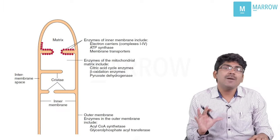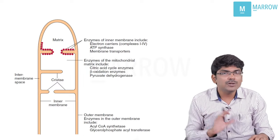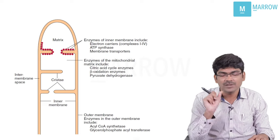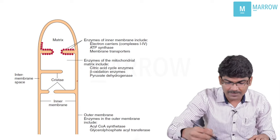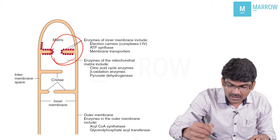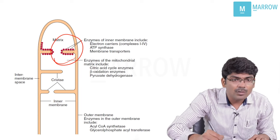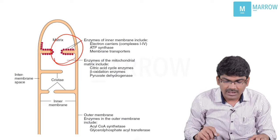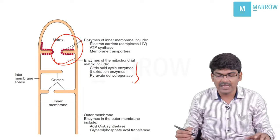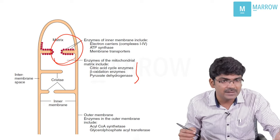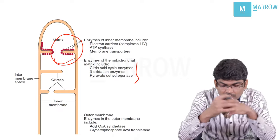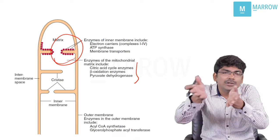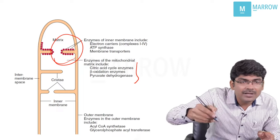Mitochondria is a double-layered structure with an outer membrane, inner membrane, and a space between them known as the intermembranous space. There is a matrix, and the inner membrane is folded upon itself to produce cristae, increasing the surface area. There are many proteins embedded in the inner membrane — the electron transport chain proteins. Electron transport chain is happening in the inner membrane of the mitochondria. The outer membrane is permeable to most molecules, but the inner membrane is selectively permeable.